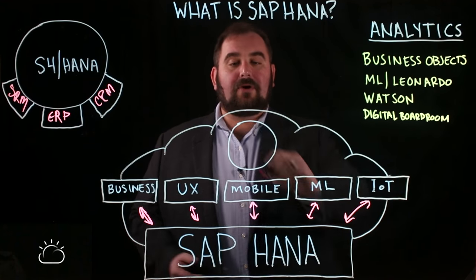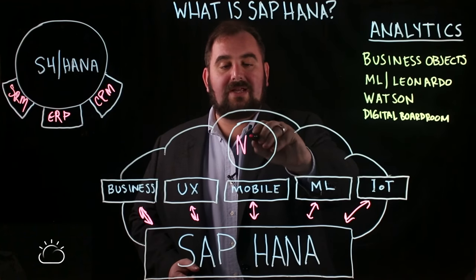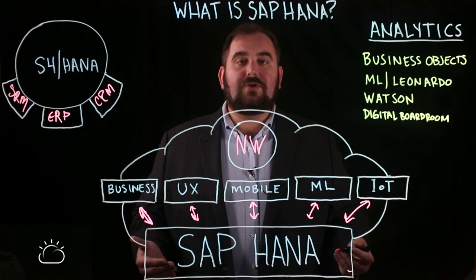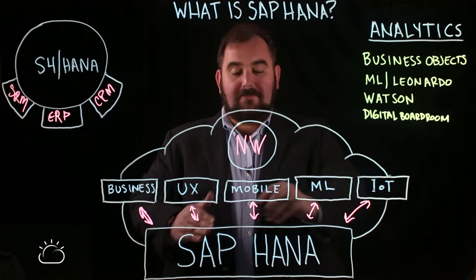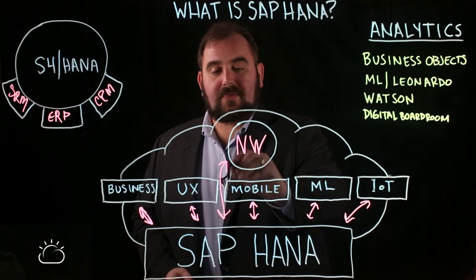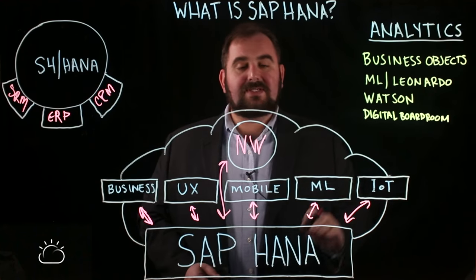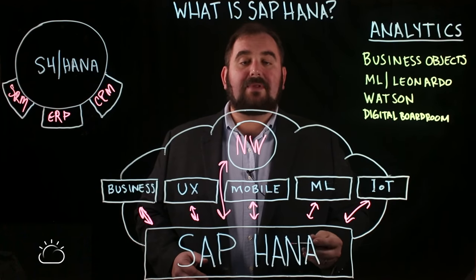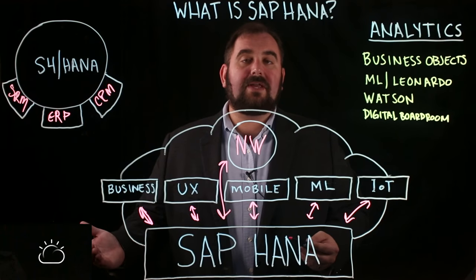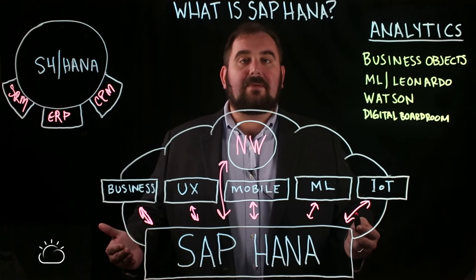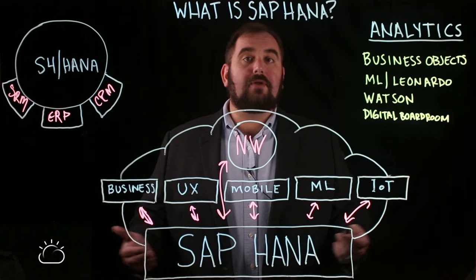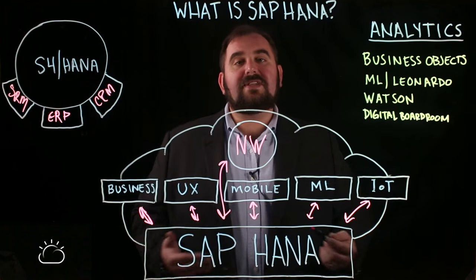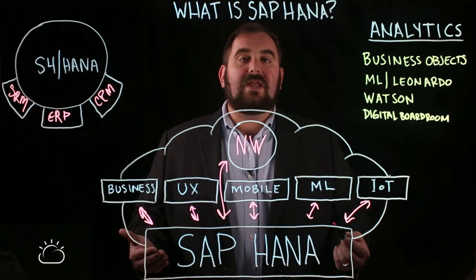And then you have the really neat part — the piece that sits right in the middle, which is the NetWeaver stack. NetWeaver is an application platform that you can deploy applications onto that talk back and forth with the HANA database. So not only do you have the data sources coming in and out, but now you've got all the applications that go along with it. Applications run on the NetWeaver platform from SAP directly, but also anyone — a third party, a business partner, a consultant — can develop an application specific to your needs on top of that NetWeaver platform.